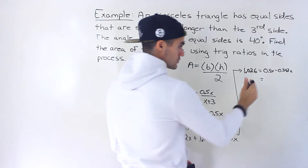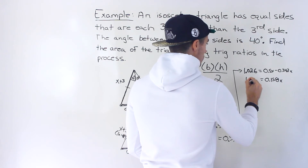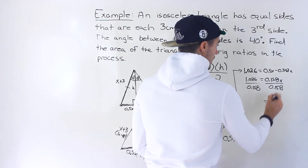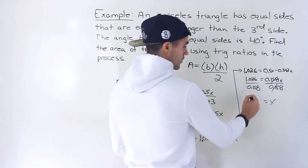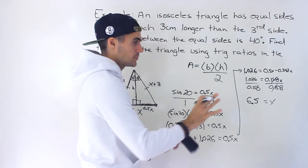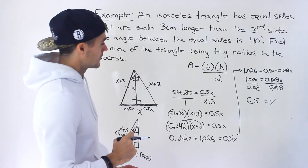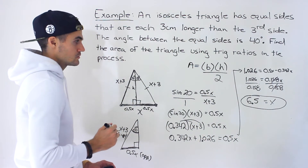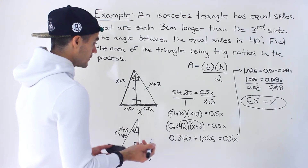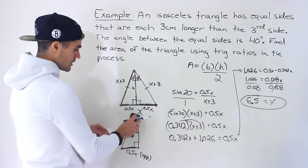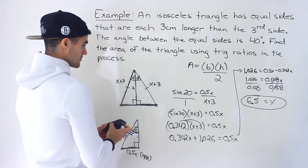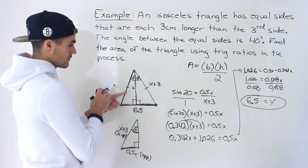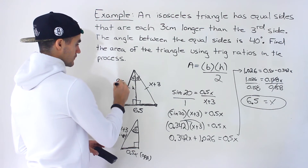0.5x minus 0.342x equals 0.158x, so we have 1.026 equals 0.158x. Dividing both sides by 0.158 gives x approximately 6.5. Going back to the main triangle, the base is 6.5 and each equal side is 6.5 plus 3, which is 9.5.